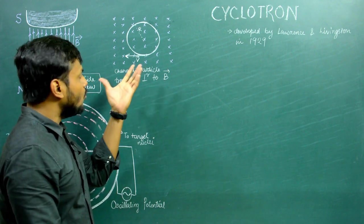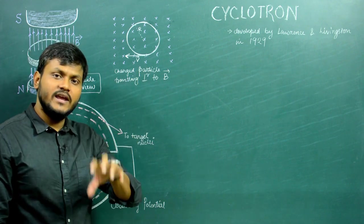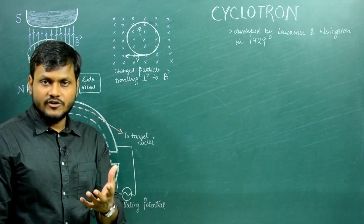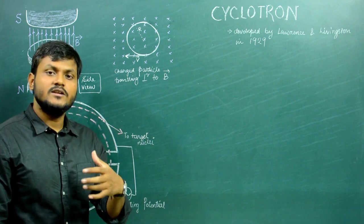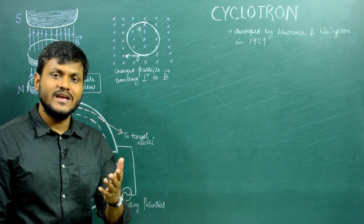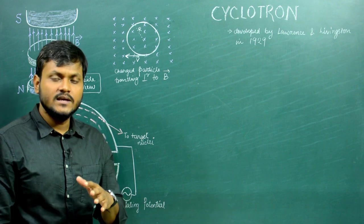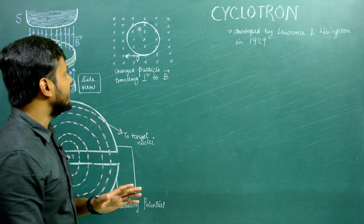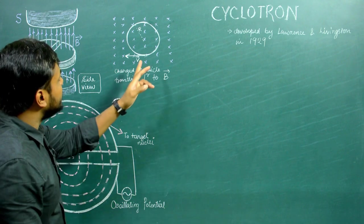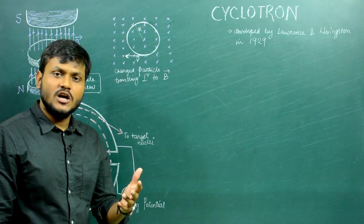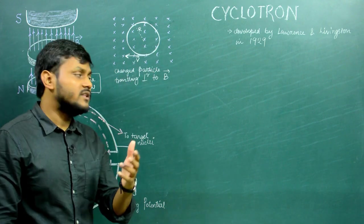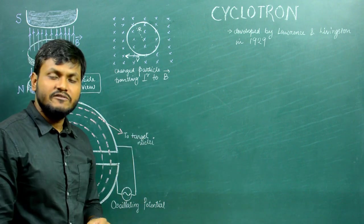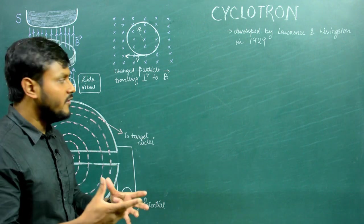If you are not sure why this is so, I have another video discussing the different kinds of trajectories created by charged particles in the presence of electric and magnetic fields. But if you are confident that a circular trajectory is exhibited by a charged particle whenever the velocity vector is perpendicular to the magnetic field line, then we can move ahead.